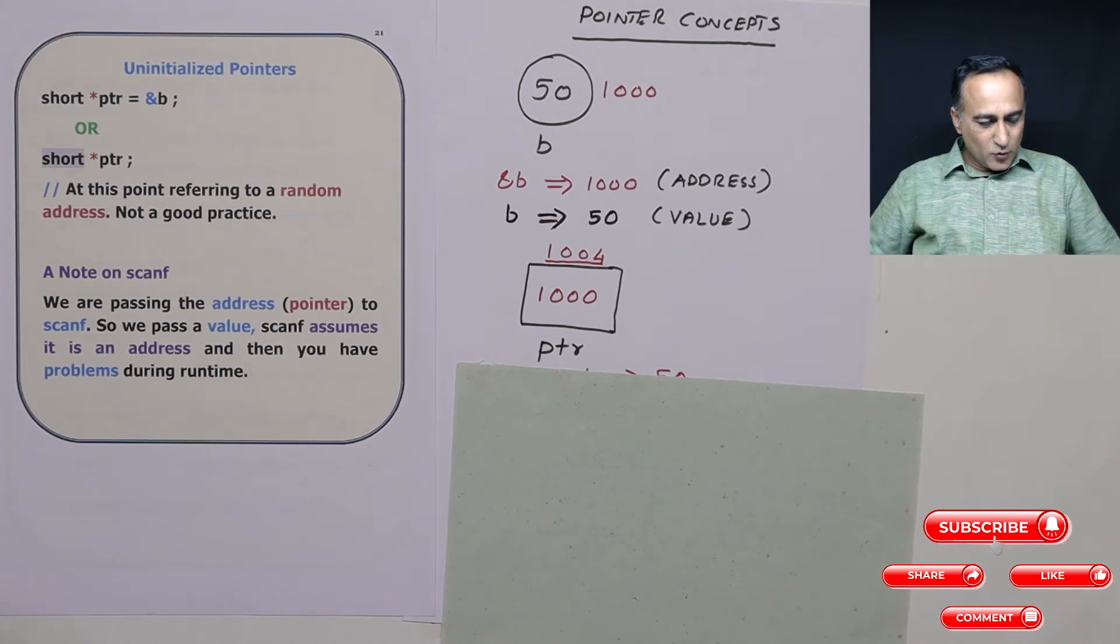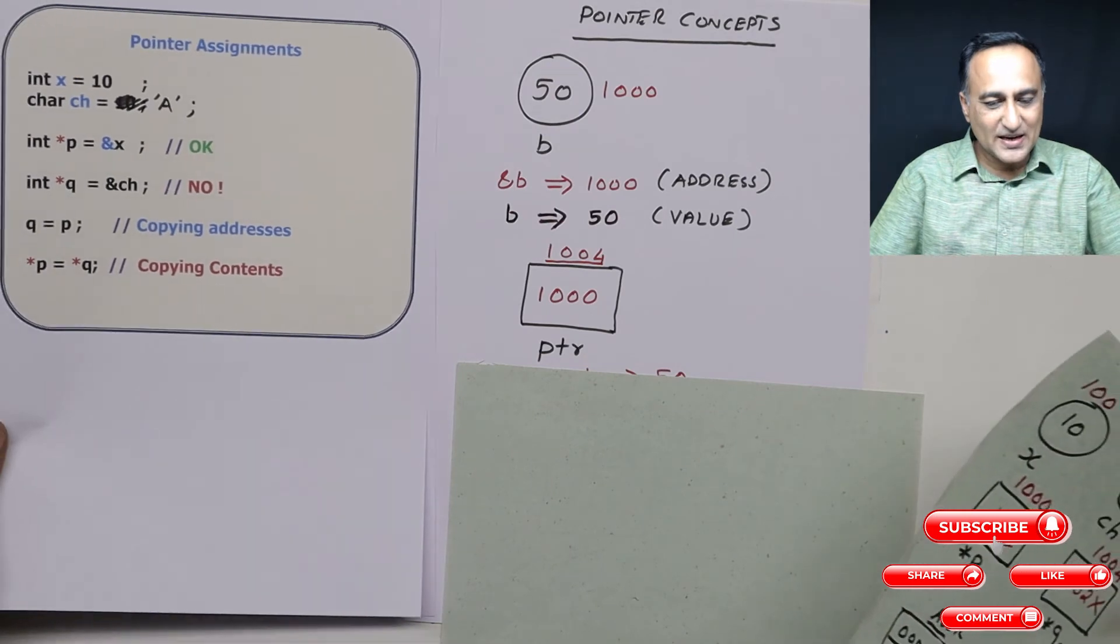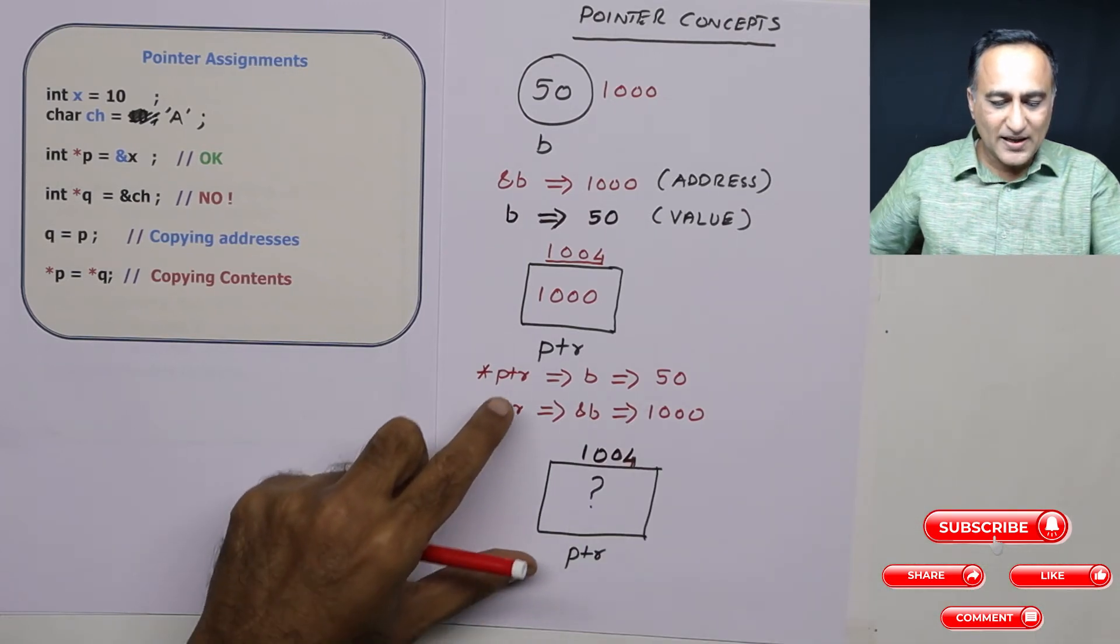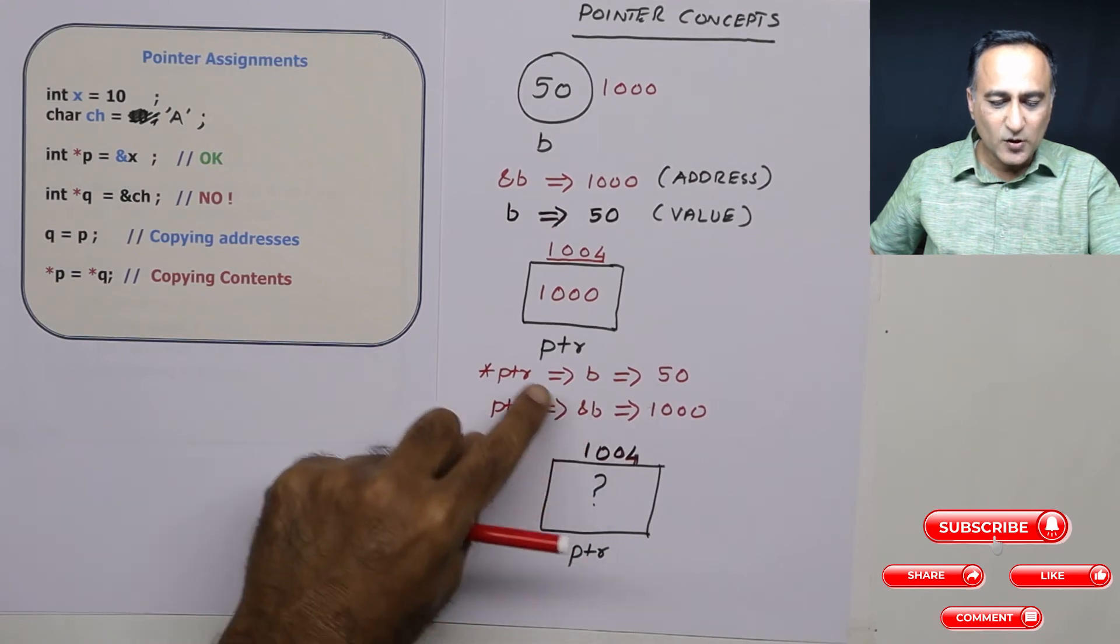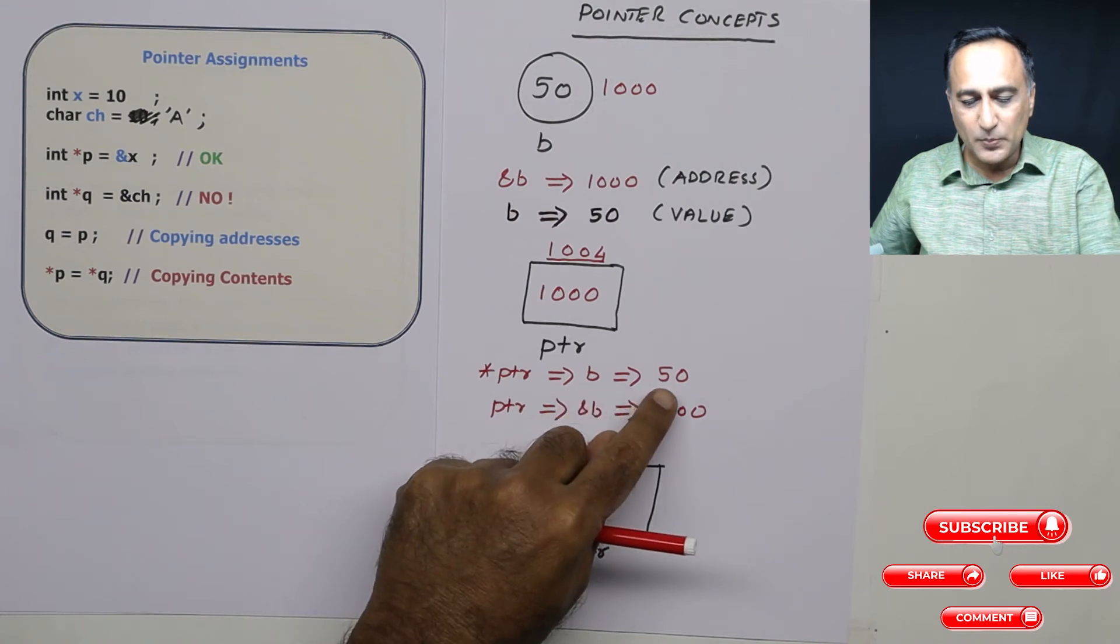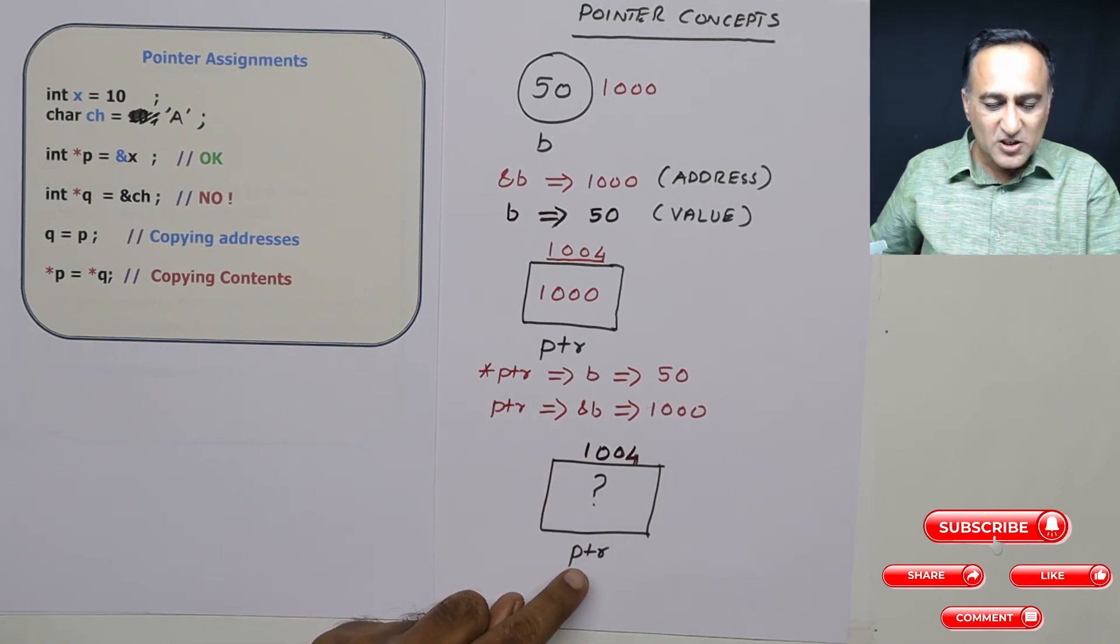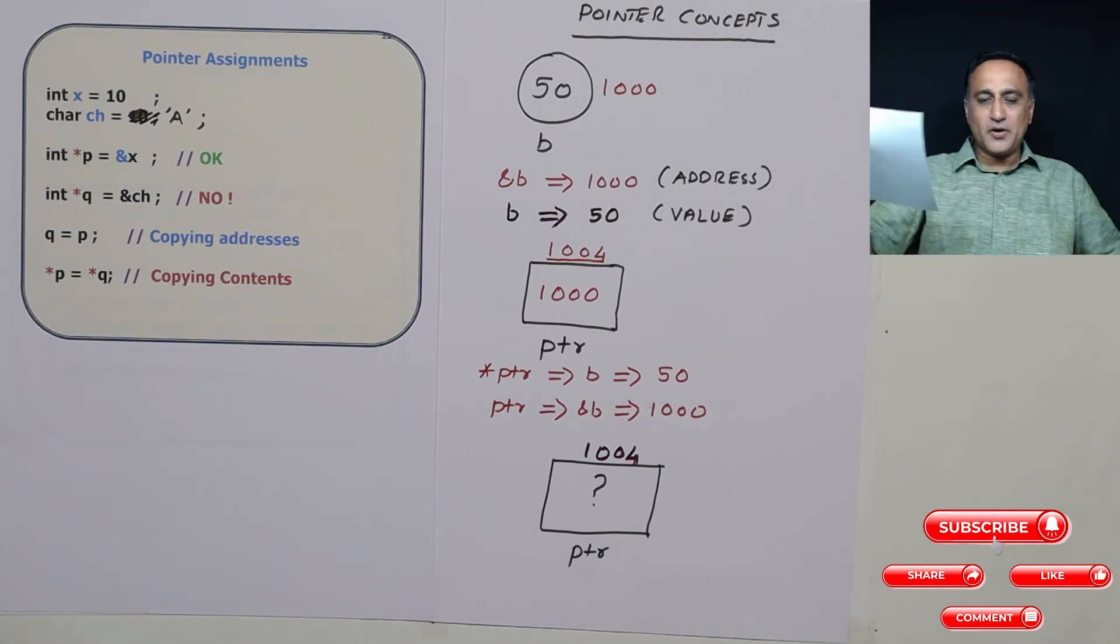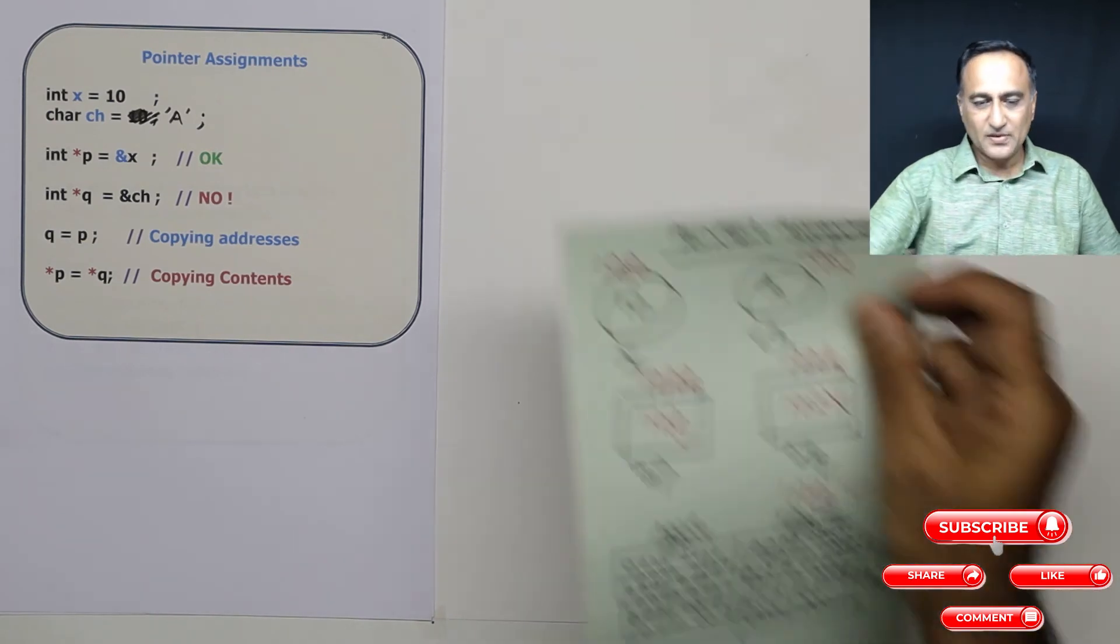Now the last thing I would like to discuss in this particular section is something called pointer assignments. So this should clarify your printing of ptr and address of b and all. So you can take a look at this diagram, this will give you a real idea. Star ptr and b mean the same, it will print 50. Ptr and address of b mean the same, it will print 1000. And if I don't initialize ptr it will take a random address. Now let's talk about pointer assignments.